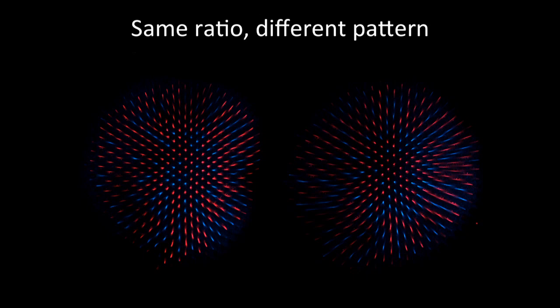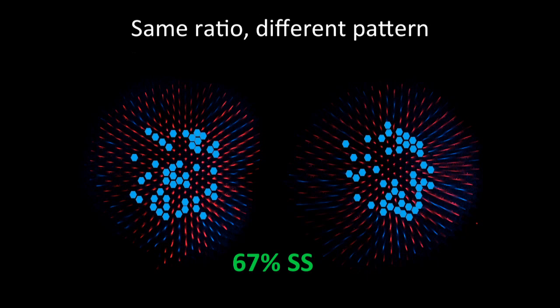So across a given genotype, we end up with the same ratio but different patterns across individual retinas. So here I'm showing just two examples of our wild type retinas. And you can see they both have a 67% spineless ratio but vastly different patterns.